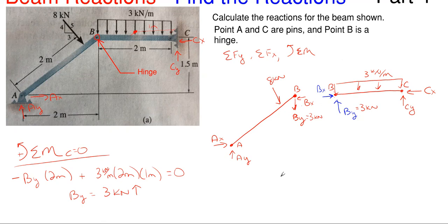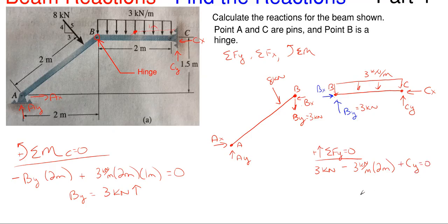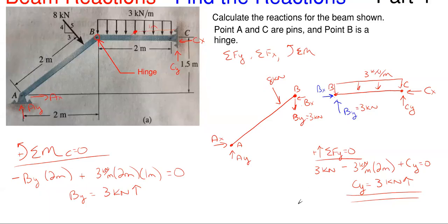Still looking at the right segment, I can get C sub Y by summing forces in the vertical direction equal to zero: B sub Y (three kilonewtons) minus three kilonewtons per meter times two meters plus C sub Y equals zero. C sub Y pops out to be a positive three kilonewtons upward — that's one of our reactions. Keep in mind, B is not really a reaction point; it's a hinge point. We use it to find our actual reactions.